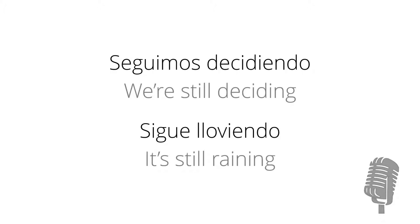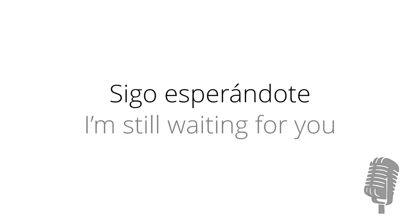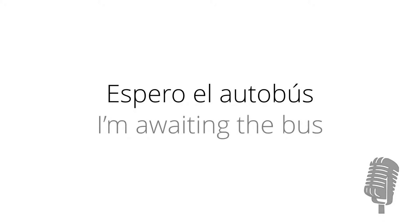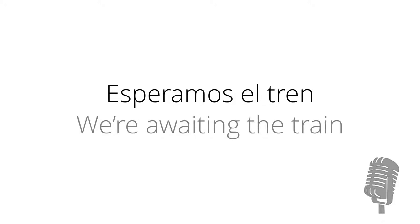So Shakira says 'sigo esperándote'. The verb 'esperar' means 'to wait', and the '-te' on the end means 'you'. So 'sigo esperándote' means 'I'm still waiting for you'. In Spanish, you don't say 'waiting for somebody' — you just say 'waiting somebody'. For example, 'espero el autobús' means 'I'm waiting for the bus', but in Spanish there's no word for 'for' here. Think of it more like 'awaiting' rather than 'waiting for'. So 'esperamos el tren' means 'we're awaiting the train'.